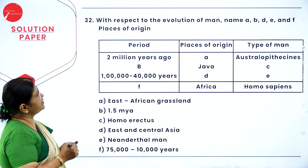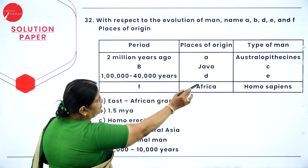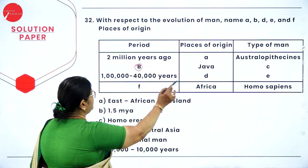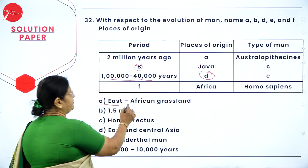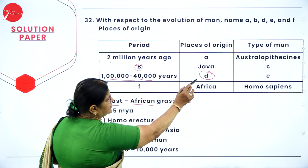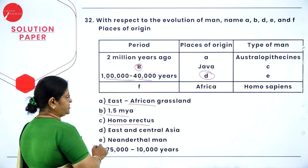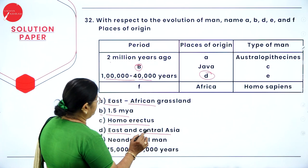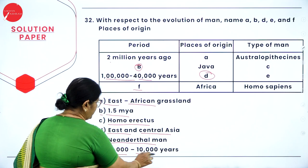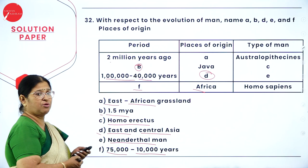Question 32: with respect to the evolution of man, complete the table with period, place of origin, and type of man. A — 2 million years ago, East African grassland, Australopithecus. B — period: 1.5 million years ago; place of origin: Java; C — type of man: Homo erectus. D — 1 lakh to 40,000 years; place of origin: East and Central Asia; E — type of man: Neanderthal man. F — period: 75,000 to 10,000 years ago; place of origin: Africa; type of man: Homo sapiens. This illustrates the change in question pattern in this model paper.